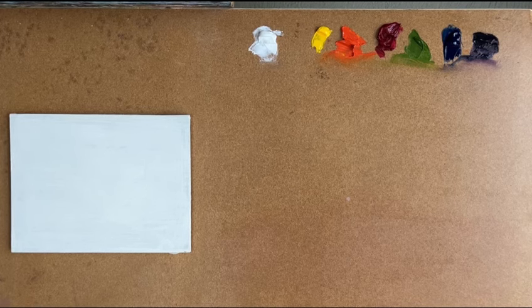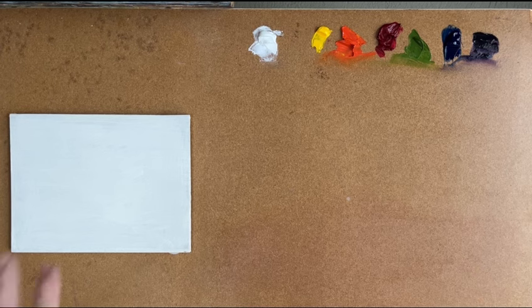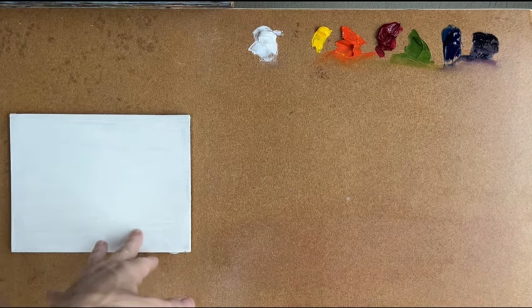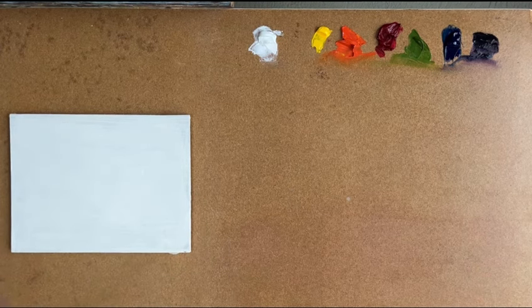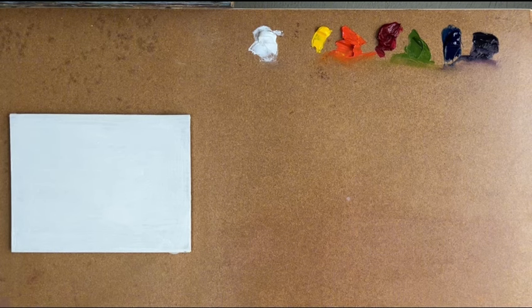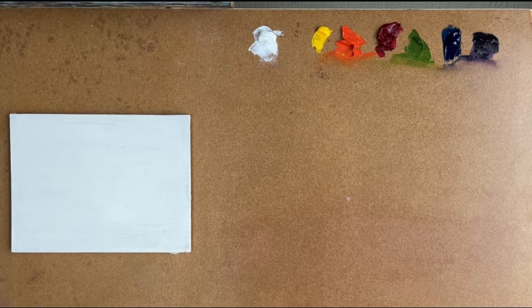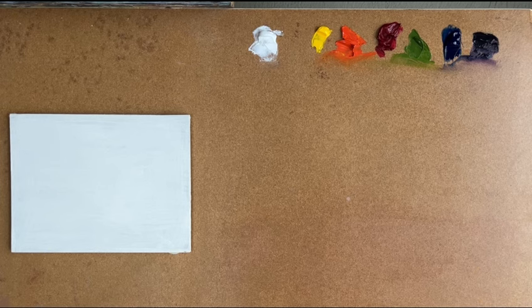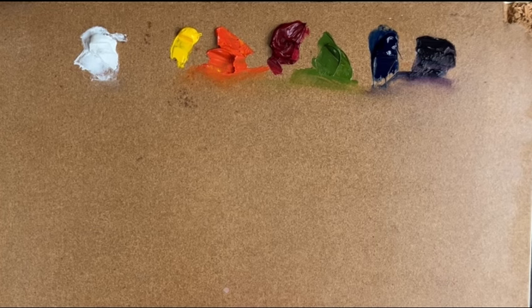So the first thing I need to do is tone my canvas. Right now it is white with the gesso and I usually tone my canvas with burnt sienna, but since I am using the limited palette, I'm going to have to mix my own burnt sienna. So how do you do that? It's really quite simple.